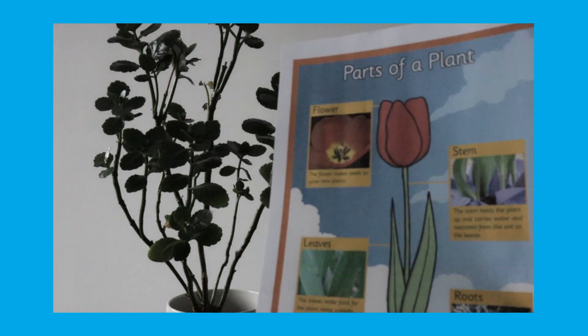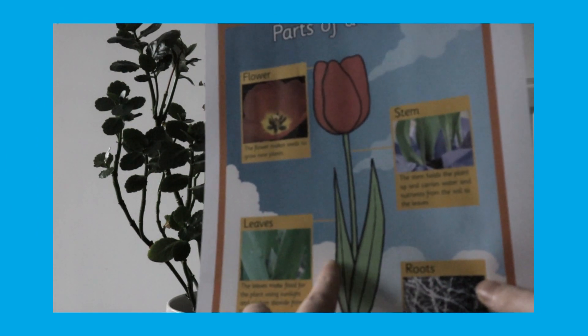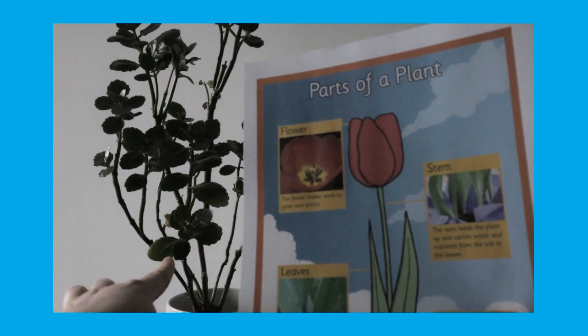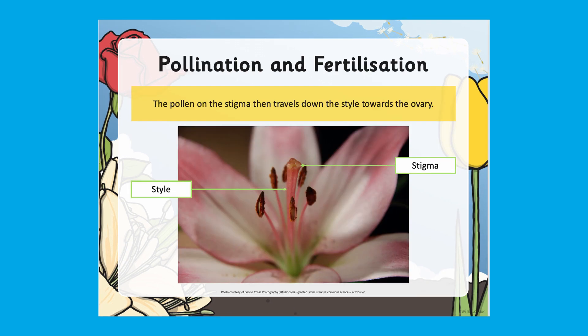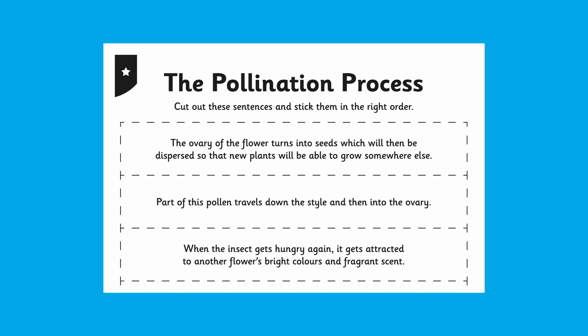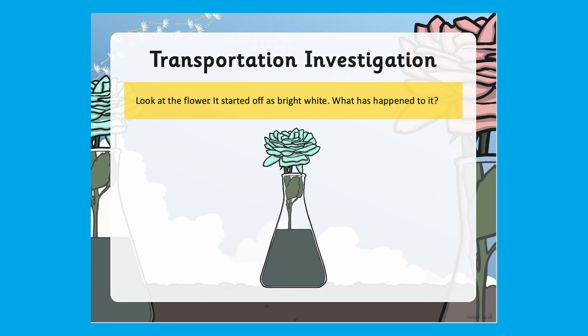You can use the resources to point out the parts of a plant — with the plant at home or even outside in a park — or go into further detail about the function of plants with the presentation and sorting cards. You can carry out a variety of science investigations using the resources as guidance.